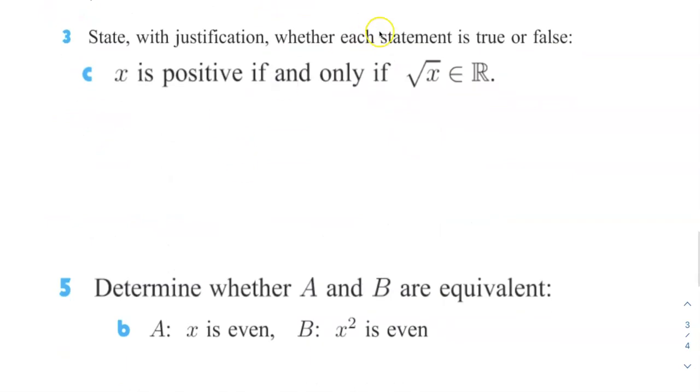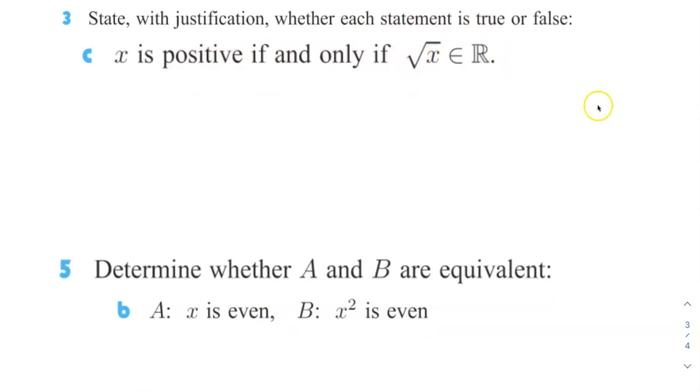Say with justification whether each statement is true or false. x is positive if and only if square root of x is in the real number. Same as last time, we have an if and only if statement. So we're trying to say x is positive implies square root of x is in the reals. And then we're also going to go backwards. Square root of x being in the reals, does that imply that x is positive? So this first one is true. If x is positive, then x positive does imply the square root of x is in the real numbers. I give you a positive number, I'm going to take the square root of it. It's also going to be in the real numbers. So that one's cool.